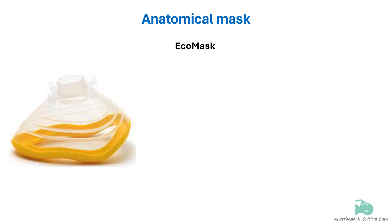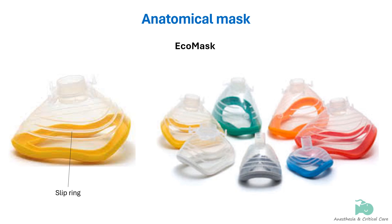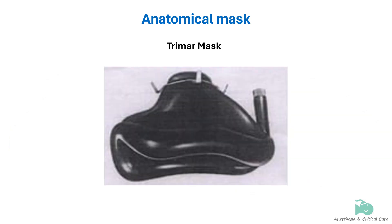The Eco mask is a non-PVC single-use anatomical face mask. It has non-slip rings for a better grip and tighter seal. Its anatomical shape and soft seal provide a comfortable fit. The transparent body allows excellent visibility. Sizes are available in a range of 7 sizes with distinct color coding for easy selection. A mask similar to the conal mask is the Trimar mask, designed with a shallower body to lessen dead space.